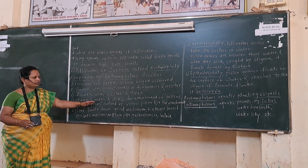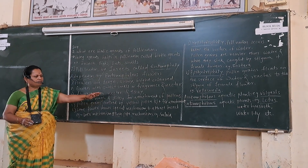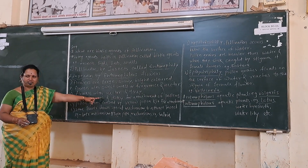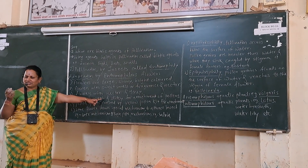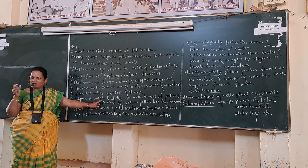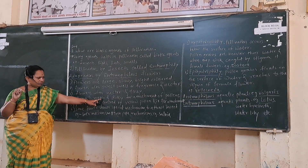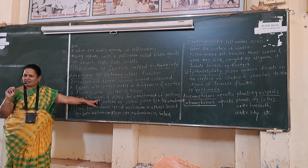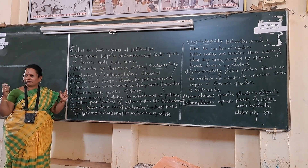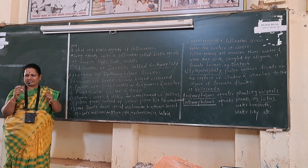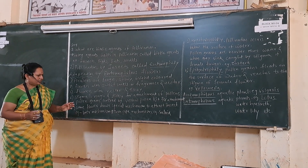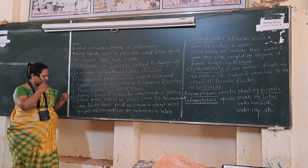The stigma is rough and sticky for the attachment of pollen grains. The stigma contains an attachment substance called fusillage, and chemicals are also present for attracting insects.